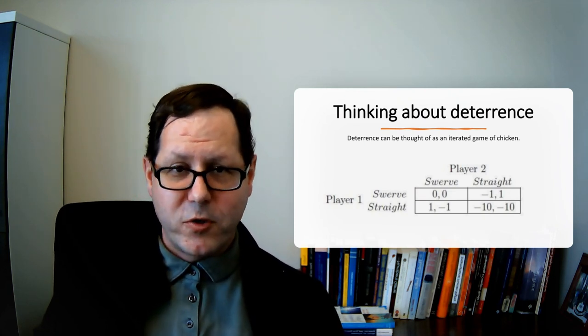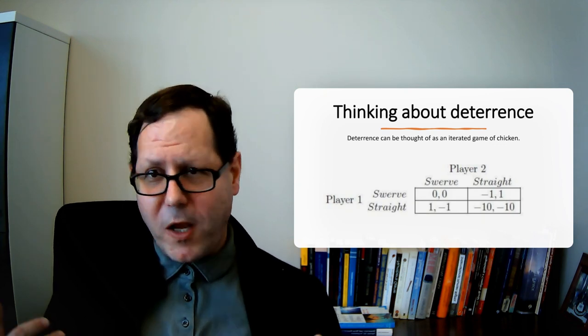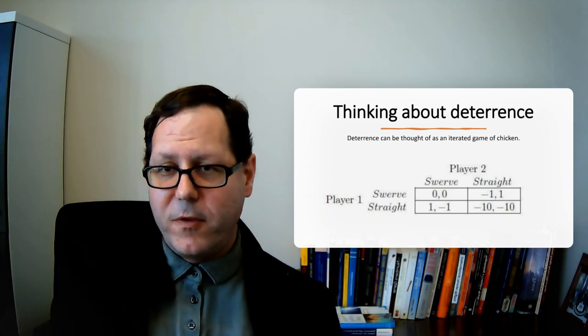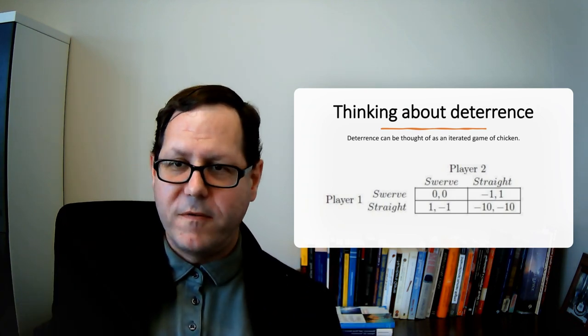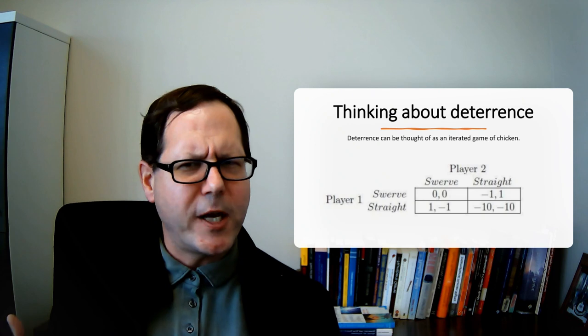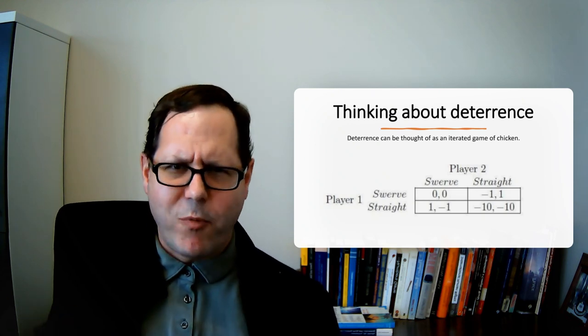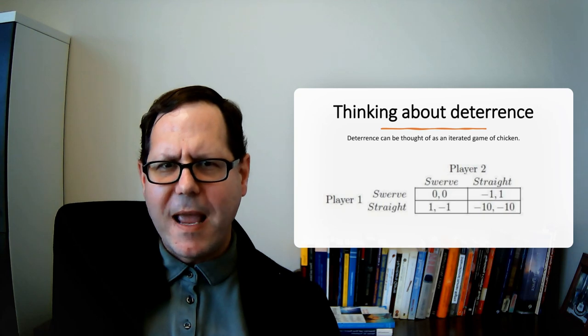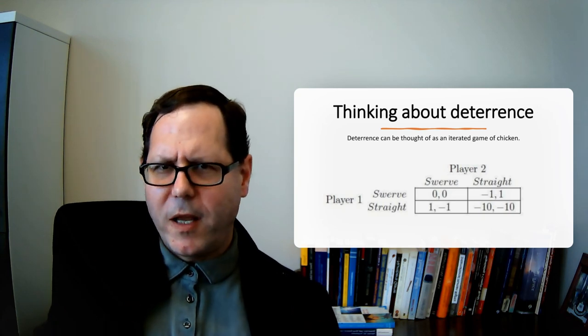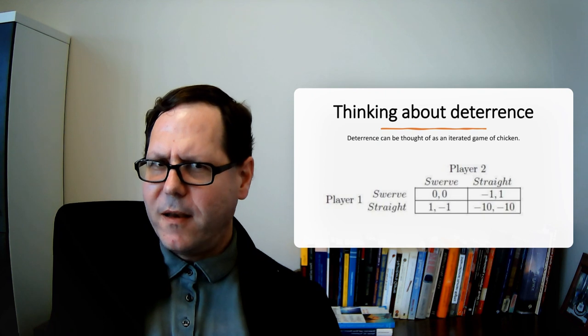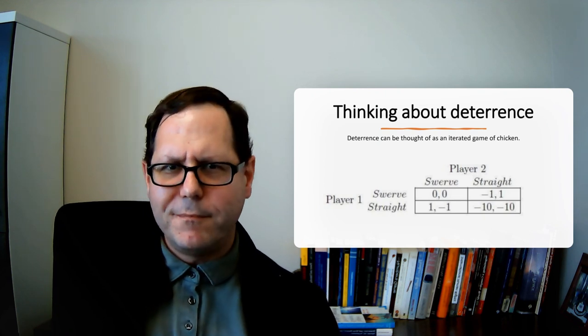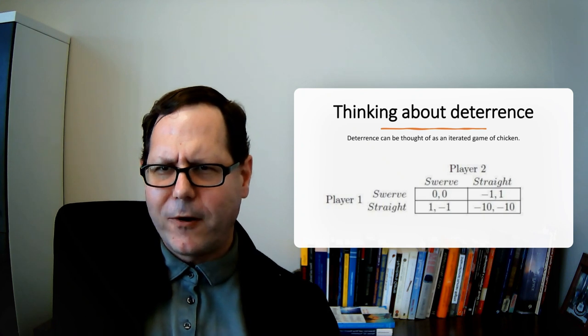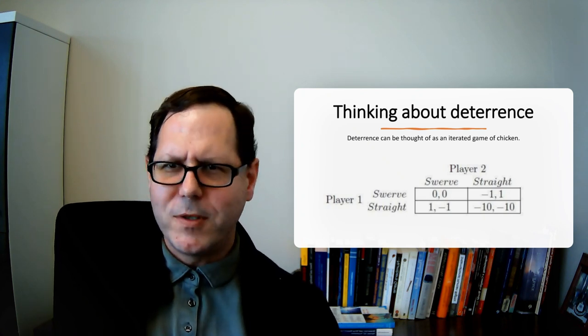But if player one goes straight and player two swerves, player one gets to jump out of the car and scream, yeah, I was not a chicken. The player two that swerves has to hang their head in shame because they are the chicken. Shame versus bragging rights, negative one versus one in our utility game. It could go the other way. Player one could swerve. But if both players go straight, they crash into each other and presumably die, which we're going to count as negative 10 in our utility scoring.